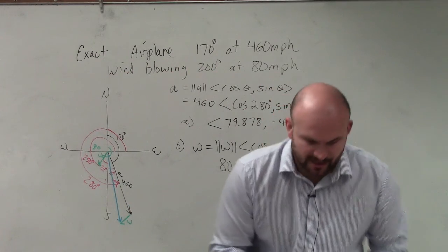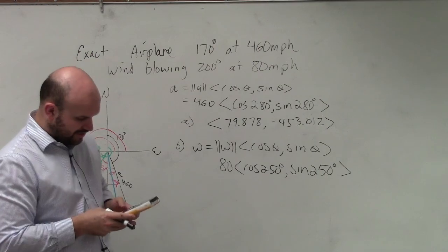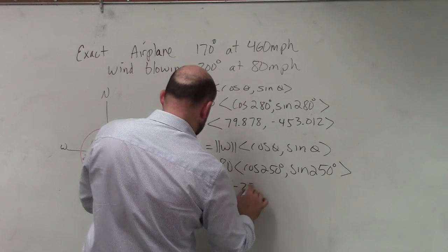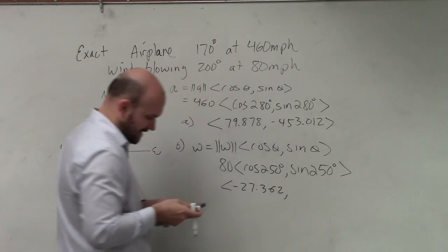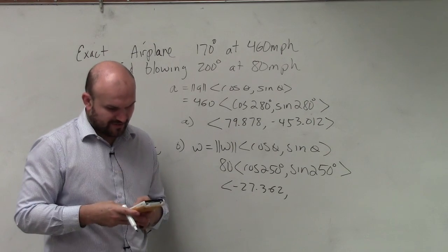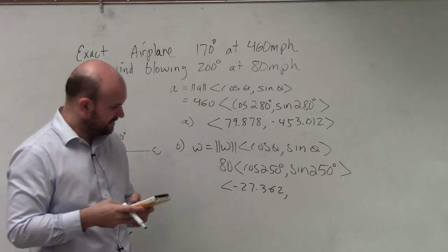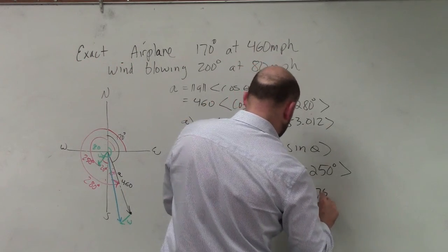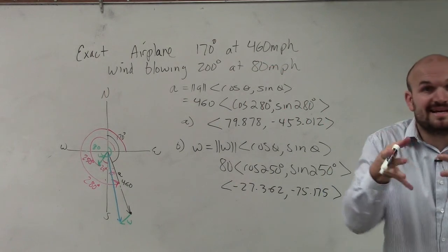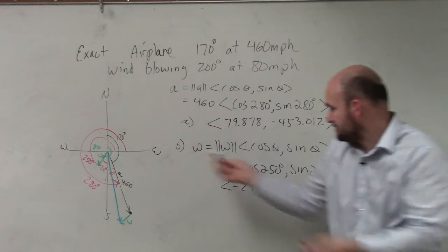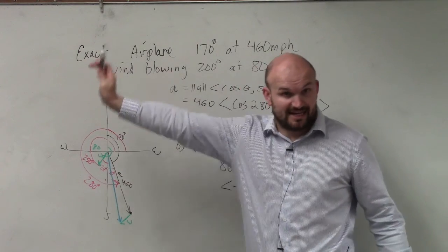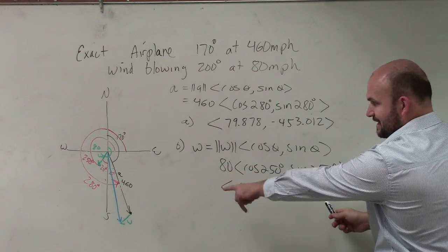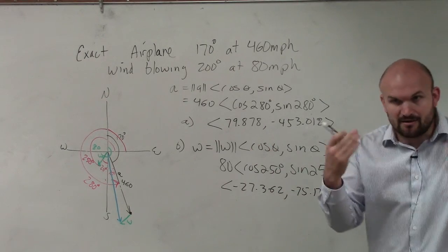So now let's plug in our calculator, see what the component form of that is. So I do cosine of 250 times 80. And that gives me negative 27.362. And then I do sine of 250 times 80. And I get negative 75.175. Again, I'm just rounding to the nearest thousandth. But again, guys, let's look at this. Does this make sense? Does that look like that vector, that green vector? It's negative, negative horizontal component, negative vertical component. Is it much smaller than my other vector? Right? So you guys can see how it kind of makes sense a little bit, right?